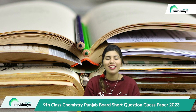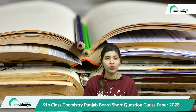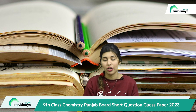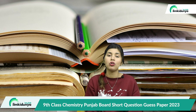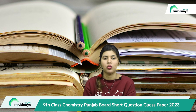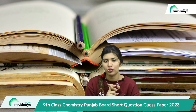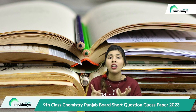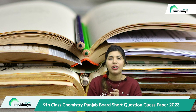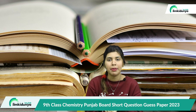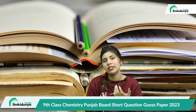Let's get started. First of all, let us know what your important short questions are on the subject of chemistry. Your paper is divided into three parts. The short questions will be knowledge-based, understanding-based, and application-based. In knowledge-based, the paper will be straightforward.